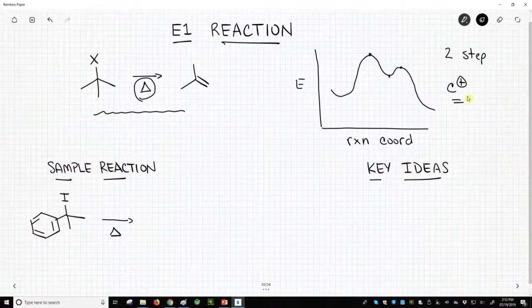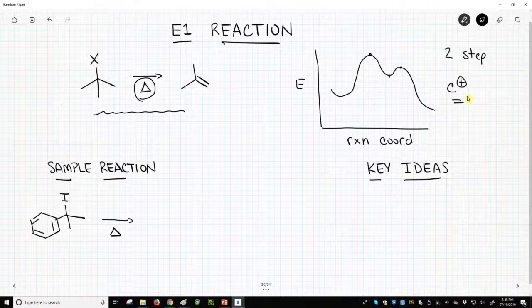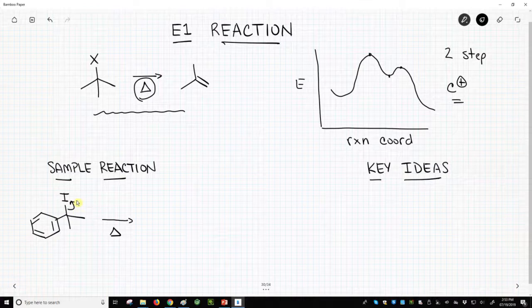Let's see a sample reaction. Just like the SN1 which also forms a carbocation, we begin this process by having our halide leave, our leaving group leaves.